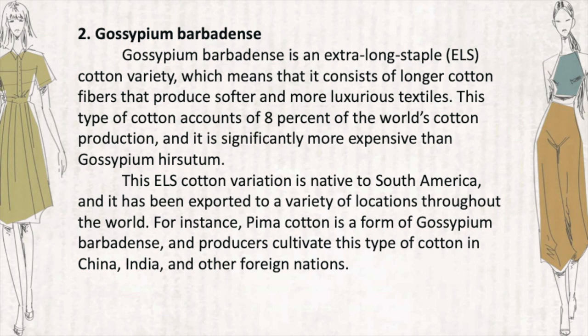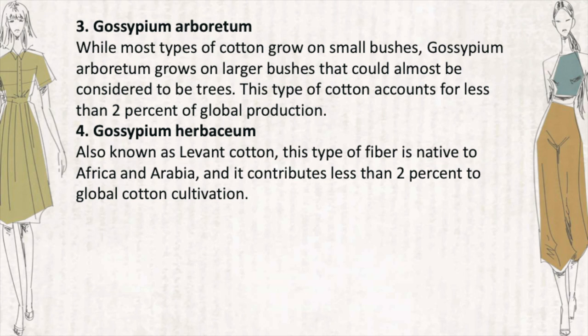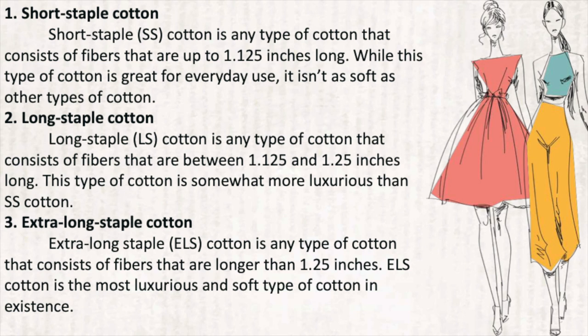While most types of cotton grow on small bushes, Gossypium arboreum grows on large bushes that could almost be considered trees. This type of cotton accounts for less than two percent of global production. Gossypium herbaceum, also known as Levant cotton, is native to Africa and Arabia and also contributes less than two percent of global cotton cultivation.